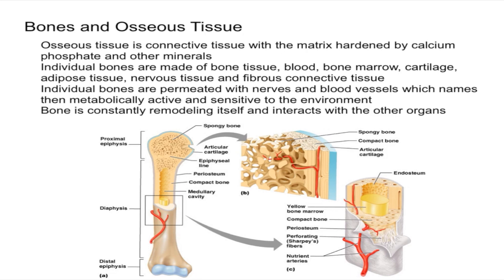One last thing to mention is that bone tissue is formed by cells called osteoblasts. We'll talk more in future videos about how this process exactly occurs.